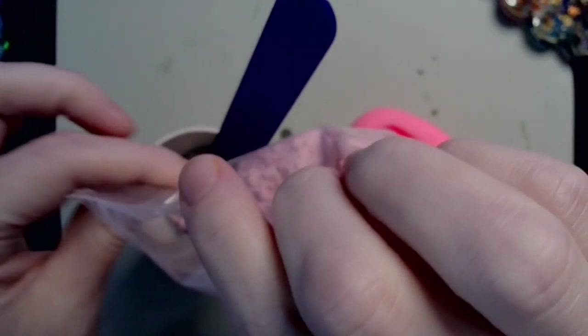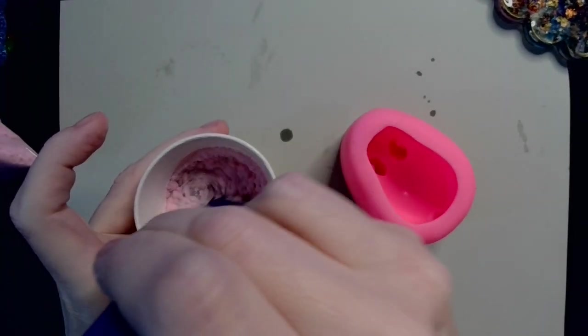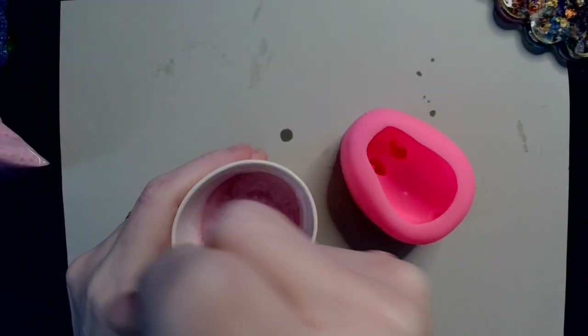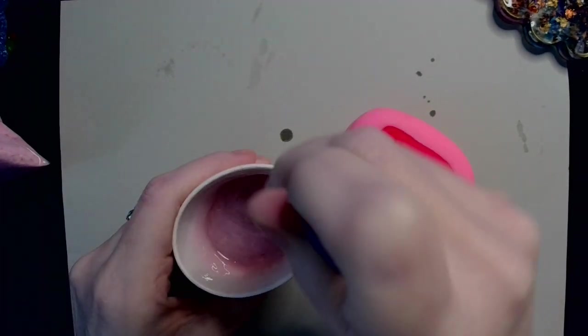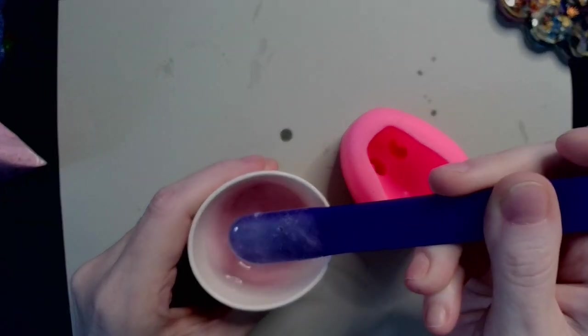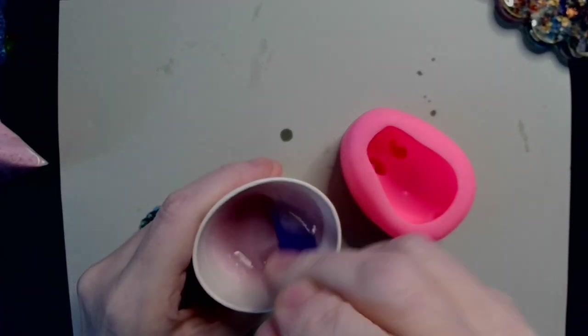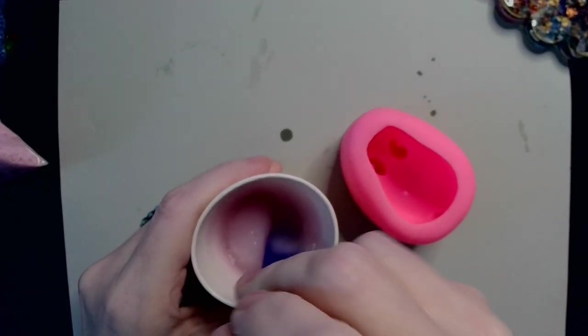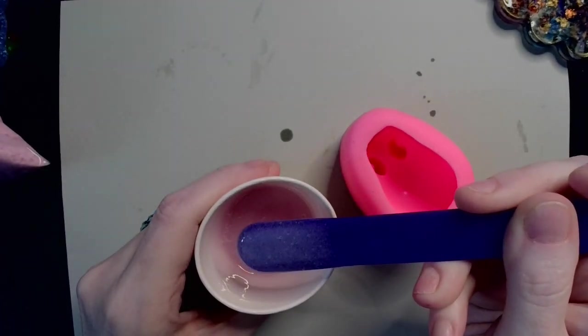So I'm just gonna add some flock in there and stir it up and see what happens. Now the bunny is actually a matte mold so it won't be shiny, and it looks like the flock is just kind of—flock is nothing but felt, it's just little tiny ground-up felt. Look at that.